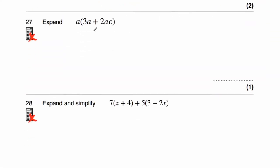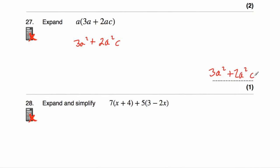Question number twenty-seven asks us to expand a(3a + 2ac). We're going to multiply both terms by a. a times 3a — three, and a times a is a squared — so 3a². Then plus, and multiplying 2ac by a — we've got two, then a times a is a squared, and finally we've got our c. The answer is 3a² + 2a²c.